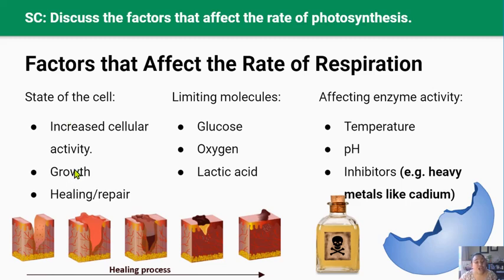Growth during childhood and puberty also increases the rate of respiration. Growth occurs through cell division — mitosis — which is a process that uses ATP, so cells need more ATP and the rate of cellular respiration increases. Growth is particularly important in plants: young growing leaves use more ATP than old leaves, growing stem tips use more ATP than older branches, and developing fruits use a lot more ATP as they grow and ripen. Areas where the plant is growing have a higher level of cellular respiration because more ATP is needed to fuel those reactions.